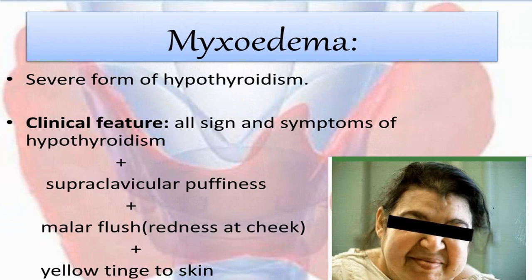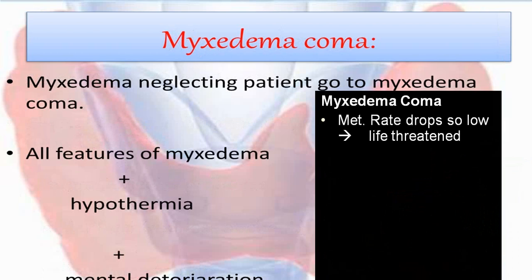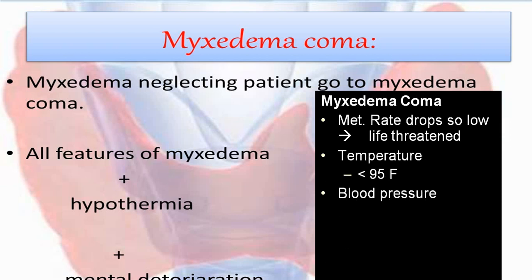Myxedema is a form of hypothyroidism presenting with a group of symptoms and signs including supraclavicular fullness, malar flush, and yellow tinge to the skin. When the person develops altered level of consciousness, severe hypothermia, and very low metabolic rate — with falling blood pressure, hypoglycemia, and mental function deterioration — we call that myxedema coma.